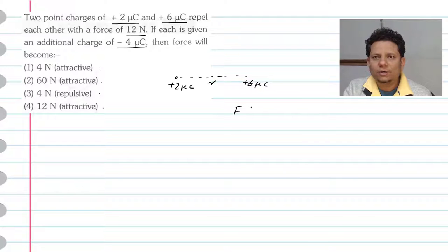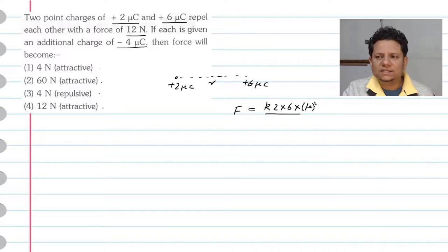In this case, the force of repulsion will be equal to k times 2 multiplied by 6 multiplied by micro square. Micro square means 10 to the power minus 6 square - we don't need to write it in this question, so we will use this divided by r square.